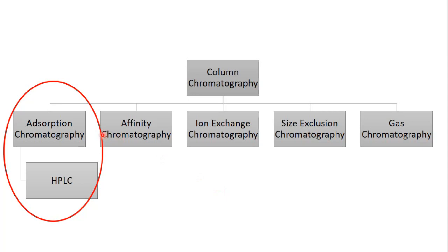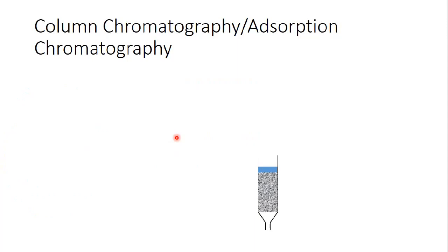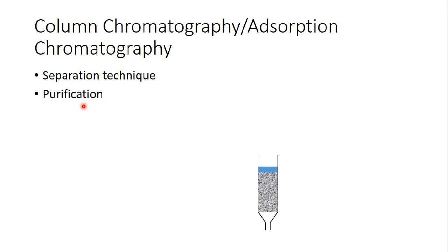In the next videos I'm going to speak about the other types. Now, what is adsorption chromatography? Adsorption chromatography is the simplest type of column chromatography. It is used mainly to purify substances — so if I have one extract and I'm interested in isolating one chemical from it, I can use adsorption chromatography to purify or isolate one chemical from a mixture.